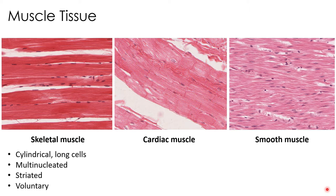Skeletal muscles are cylindrical, long cells. In fact, most skeletal muscle cells go the entire length of the muscle. They're multinucleated, and those nuclei tend to be located around the perimeter. They're striated, and these striations reflect the overlapping patterns of parallel thin and thick contractile filaments. Skeletal muscle is also voluntary — you have control over whether a skeletal muscle contracts or does not contract.